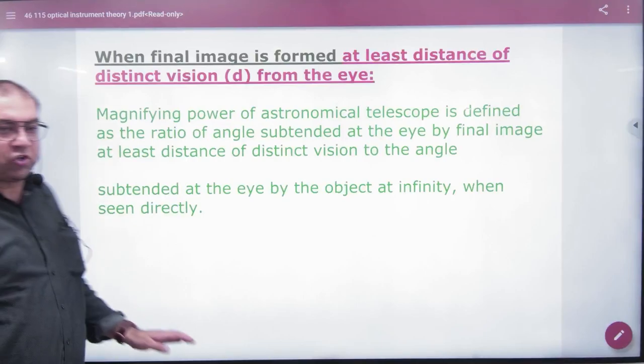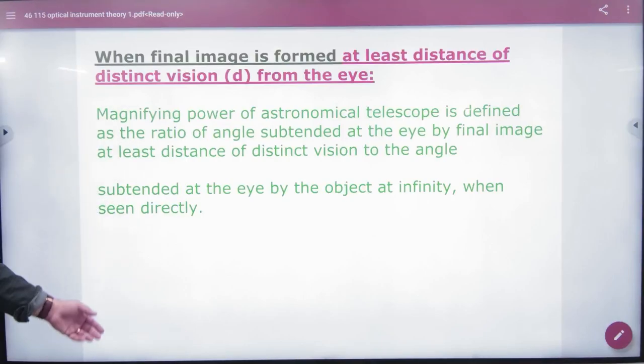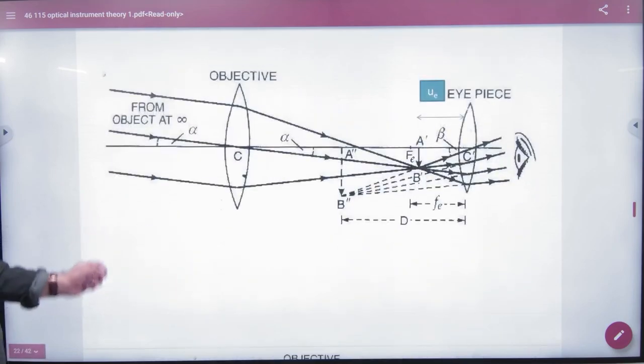Next step, again, astronomical telescope, but the image is formed at D, least distance of distinct vision. There's not a difference in the whole question.